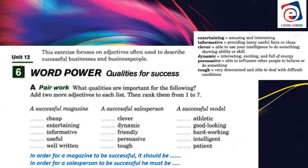A successful model must be athletic — strong and have a good strong body. She or he must be good-looking and hard-working. They must be intelligent, similar to smart, meaning having knowledge. And they must be patient, because you don't always succeed the first time. These are good adjectives to describe a successful product, particularly a successful magazine, salesperson, and model.